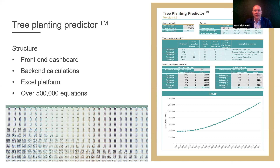The key features include a front-end dashboard, particularly for the professional version, which has all of those input data that can be manipulated. There's then a series of back-end calculations — we're now in version two of the professional version, and it's currently over 500,000 equations sitting in the back-end of the tool, which enable us to do the type of analyses that are important.